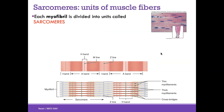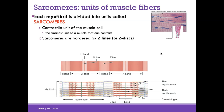Zooming into the myofibril, we see it's divided into specific units called sarcomeres. A sarcomere is the contractile unit of the muscle cell — the smallest unit of a muscle that can contract on its own. Each sarcomere can contract, and collectively the entire myofibril will shorten. Combined over many myofibers, the entire fascicle will contract and shorten.